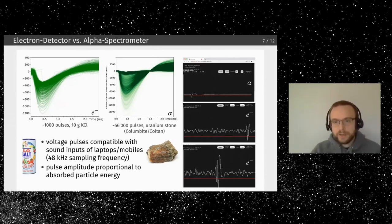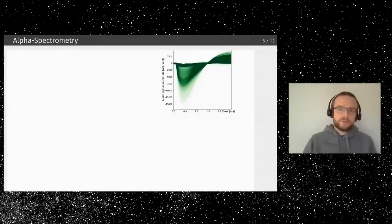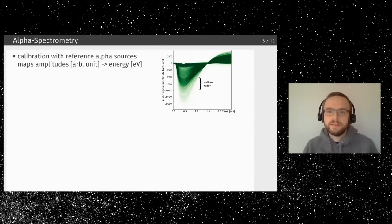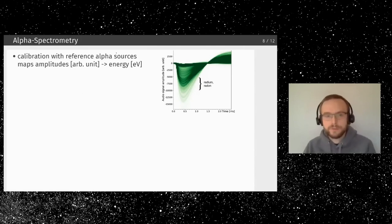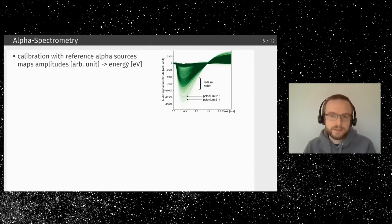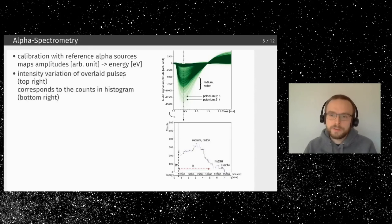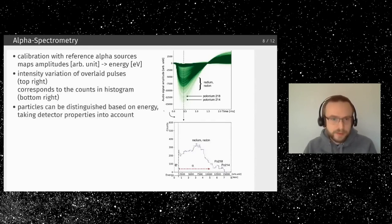For the electron detector it's best to simply count particles; for the alpha detector the pulse size can be evaluated for energy measurements — also called spectrometry. Looking at many recorded pulses, peaks of intensity correspond to specific radionuclides like radium and radon. Using a reference alpha source for calibration — provided on GitHub — the calibration can be reused if you use the same sound settings. Two weak lines correspond to two distinctive polonium isotopes from the uranium decay chain.